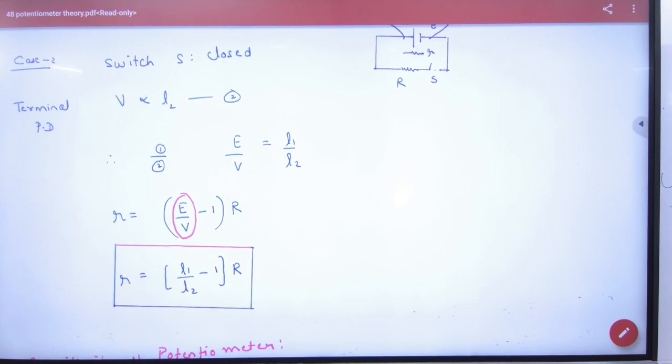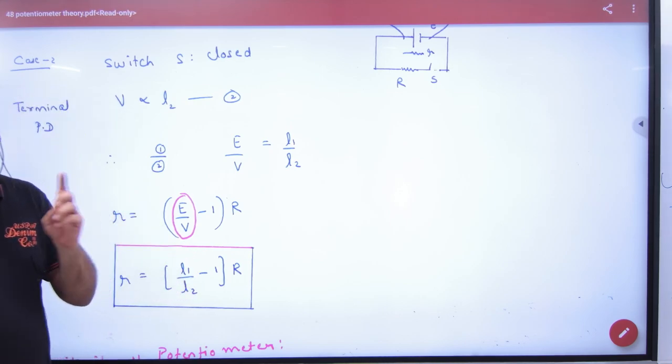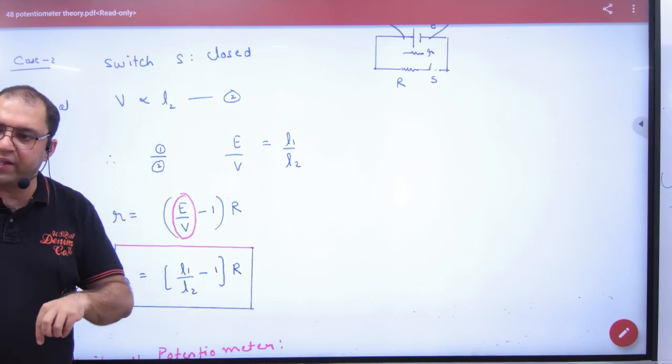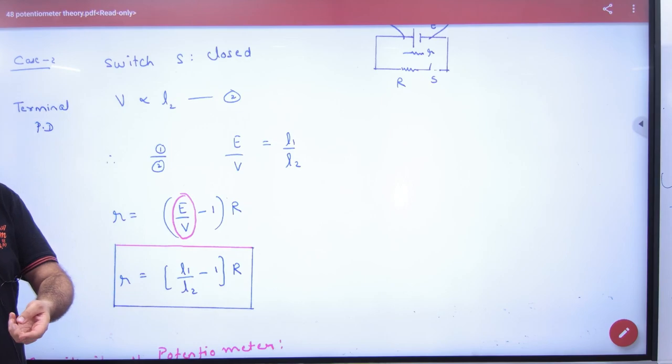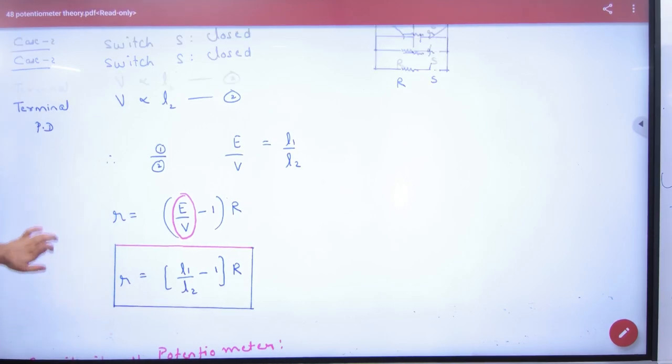Note this formula. Internal resistance can be found where L1 is the first balancing length when the battery is connected with no current, and L2 is the second balancing length when current flows from the battery. So remember to keep this.